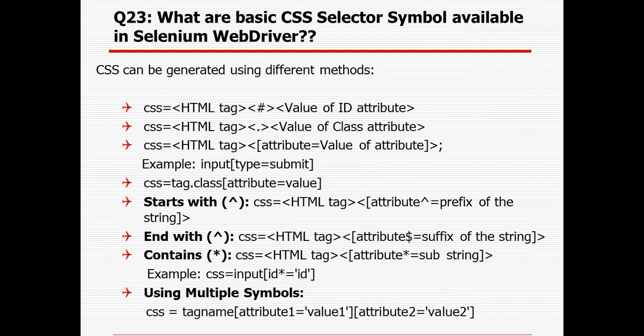Just like XPath, we can also create our own CSS selector. Unlike XPath, for CSS selector we go with the HTML tag then hash followed by the ID attribute. CSS is pretty much easier to create than XPath, but we should prefer XPath and not rely too much on CSS. For example, for an input field with type submit: input[type='submit']. Similar to XPath, we can also use starts-with, ends-with, and contains in CSS, as well as multiple symbols.